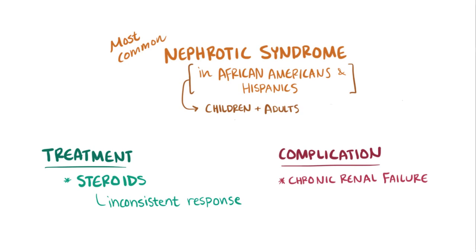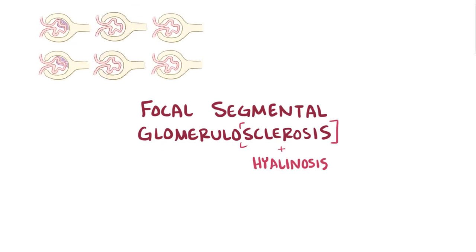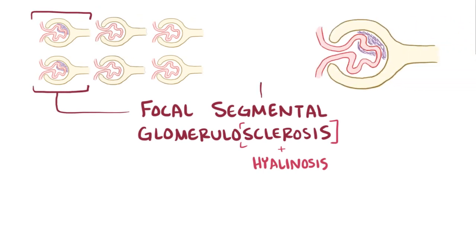As a quick recap, focal segmental glomerulosclerosis is a nephrotic syndrome characterized by sclerosis and hyalinosis in some, but not all, glomeruli, and usually only affects part of the glomeruli that it does affect.